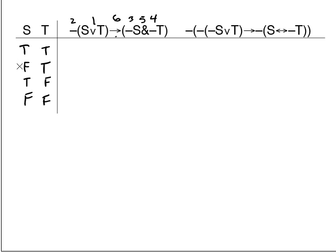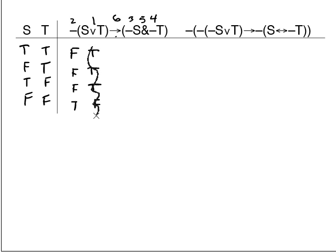For dash-s wedge t, the main connective is the dash, so we work on the wedge first, then the dash. We can look at the s and t columns directly: s true and t true gives true; s false and t true gives true; s true and t false gives true; both false gives false. That's step one. Now I look at the dash — it negates what's inside the parentheses — so we get false, false, false, true.